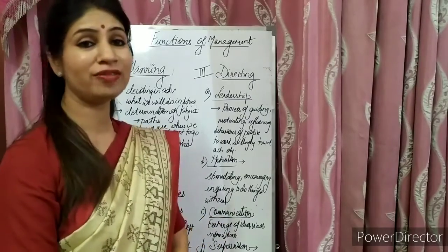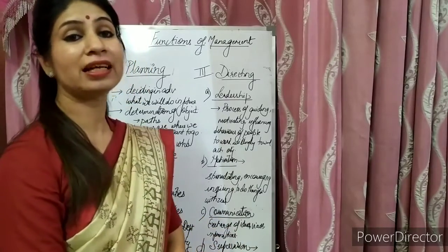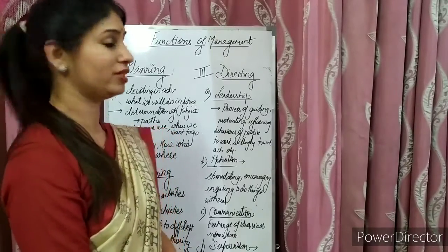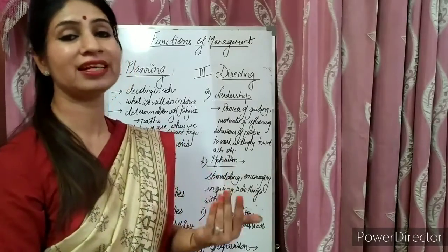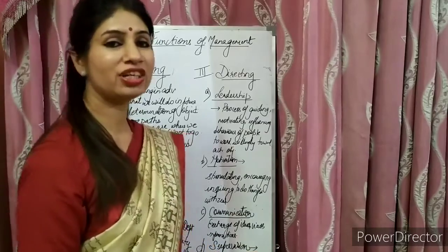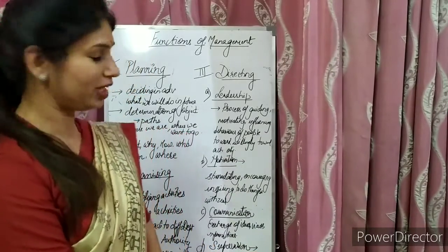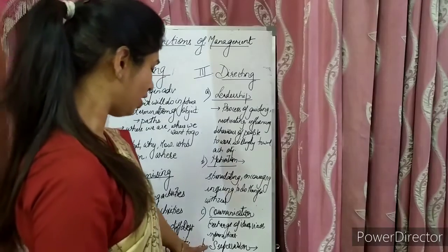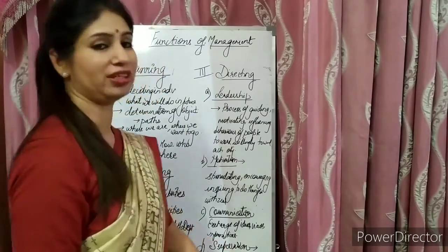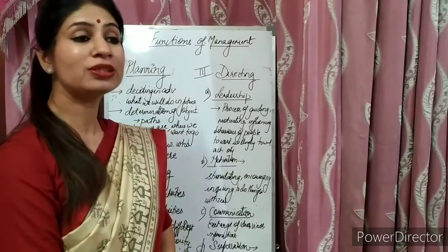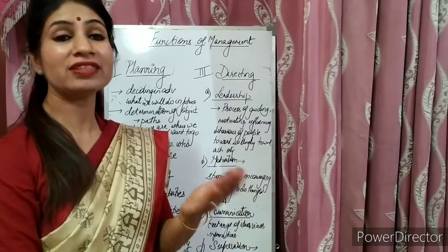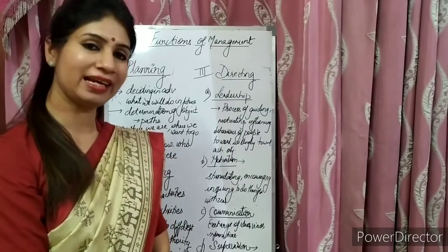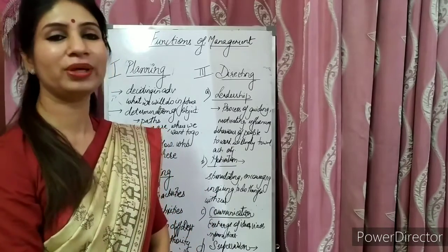Next is communication, also a very important function of management. The manager communicates his message, information, ideas, and views to his employees. Without communication, he cannot get things done. Communication is basically the exchange of ideas, views, information, and knowledge between two or more persons. Last in directing is supervision — the manager ensures that whatever tasks he has given to his employees, they are performing well according to the set objectives.